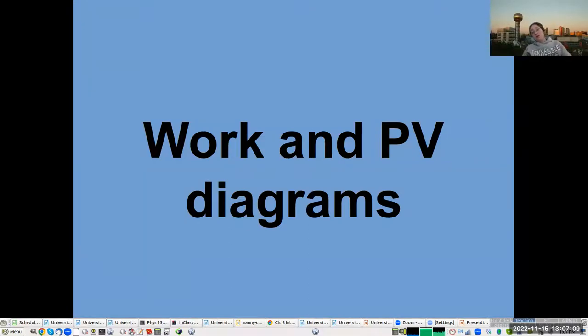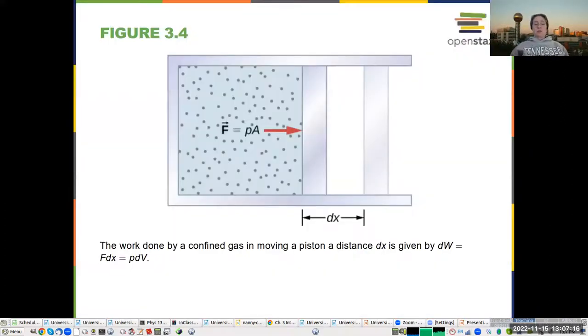All right, so then a lot of what we're working with here is work and the PV or pressure-volume diagrams. So, if you have a gas and the gas is expanding, the gas can do work, and the force is given by the pressure times the area. Remember the pressure is a measure of the force per unit area. So, if you want the actual force on this piston, you multiply the pressure times the area, and that gives you the force.